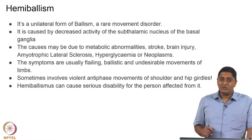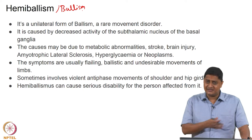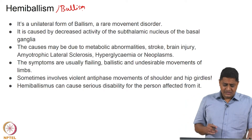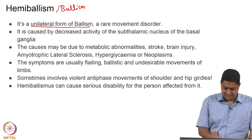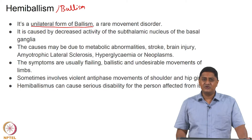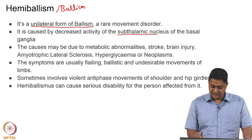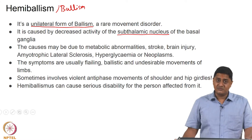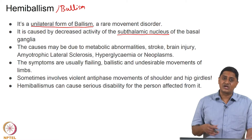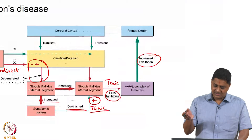In the case of hemiballism or ballism — if ballism happens on one side of the body, that is called hemiballism, a unilateral form. This is usually due to dysfunction of the subthalamic nucleus of the basal ganglia. If for whatever reason the subthalamic nucleus is knocked out, unwanted movements are produced because the subthalamic nucleus is tonically exciting the GPI.